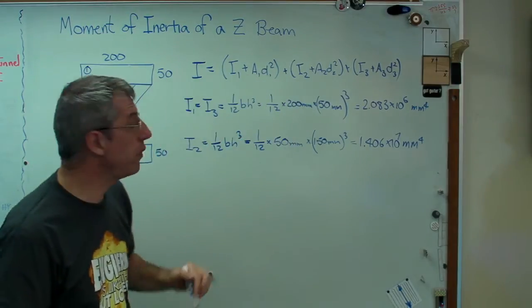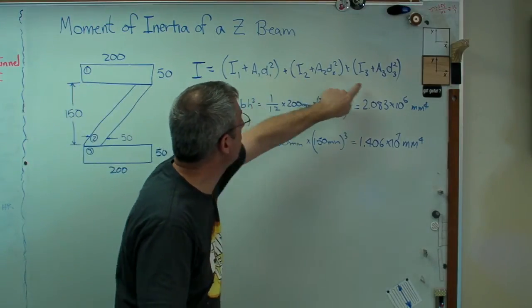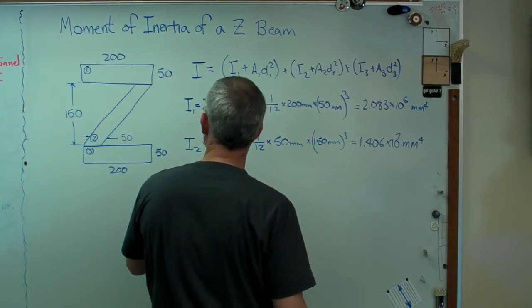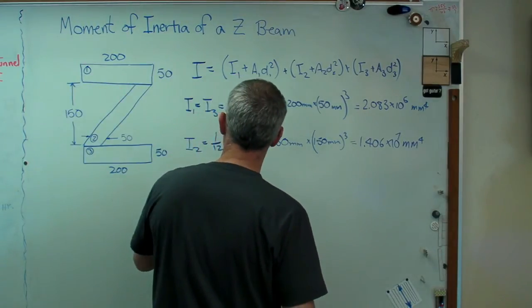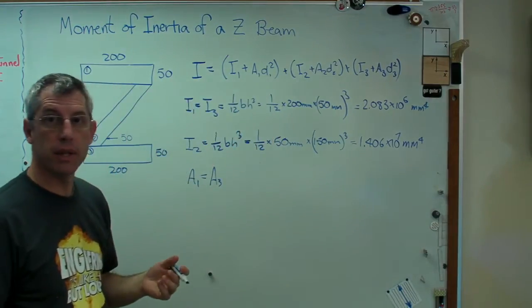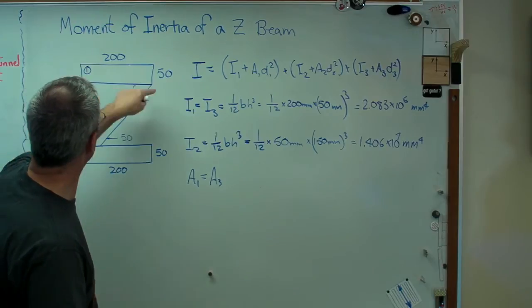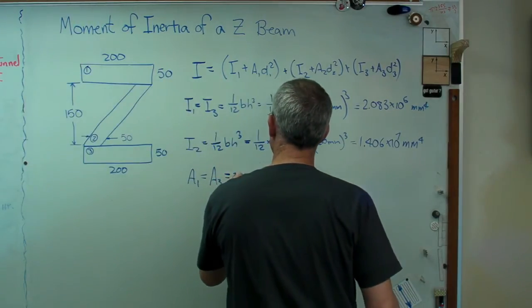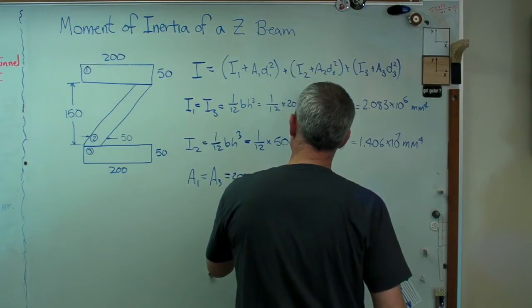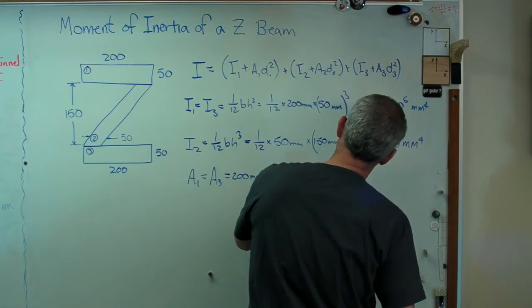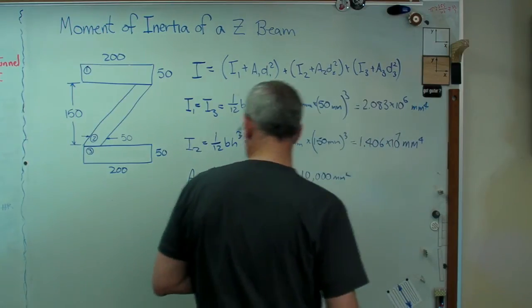So far, we've got that term, that term, and that term all figured out. Well, the areas are pretty easy. A1 is going to be equal to A3. A1 equals A3. And that's just base times height. That's easy. And so that's 200 millimeters times 50 millimeters. And that should be 10,000 millimeters squared.